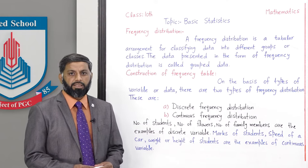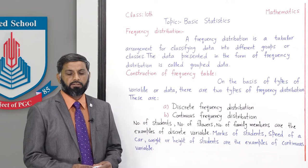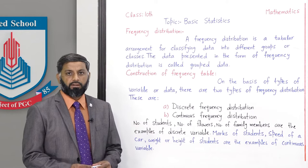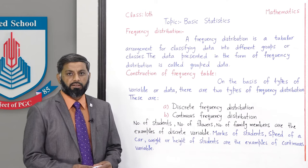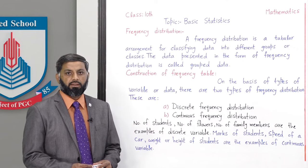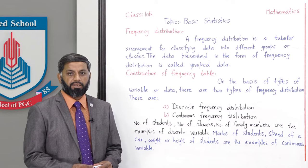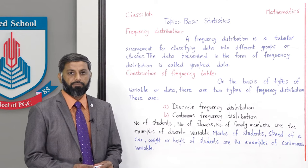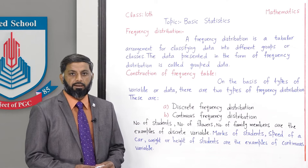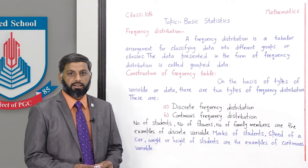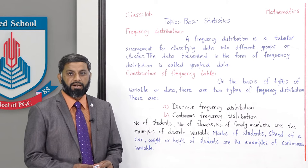Statistics means collection of data. Data کسی بھی type کا ہو سکتا ہے — for example, ہم کسی بھی class میں students کے marks کا data collect کر سکتے ہیں، یا ایک مقصود area میں کتنے افراد نے graduation کی ہوئی ہے یہ data بھی collect کر سکتے ہیں۔ جو بھی data ہم first time collect کرتے ہیں اسے raw data یا first-hand data کہتے ہیں۔